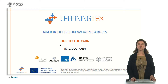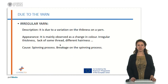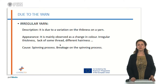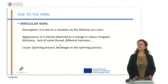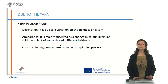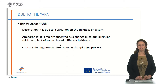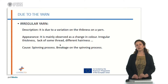What are we going to explain about irregular yarns? Well, here we can say that the description is due to aberration in the thickness of a yarn. So usually what we are going to find is an irregular shape, or we are going to find that the thickness is not homogeneous — and obviously it is not homogeneous when it was supposed to be homogeneous.